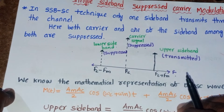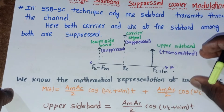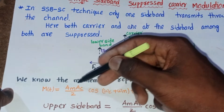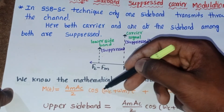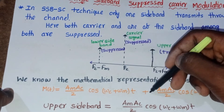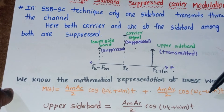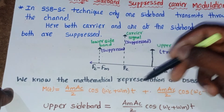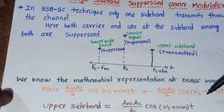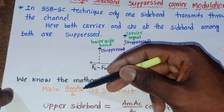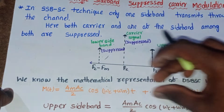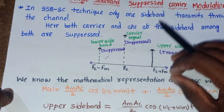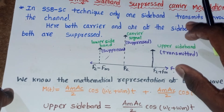To represent SSB-SC mathematically, let's first consider the DSB-SC modulated wave. The mathematical representation of the DSB-SC wave is: m(t) = (Am·Ac/2)·cos(ωc + ωm)t + (Am·Ac/2)·cos(ωc − ωm)t, where cos(ωc + ωm) is the upper sideband, cos(ωc − ωm) is the lower sideband, Am is the amplitude of the message signal, and Ac is the amplitude of the carrier signal.